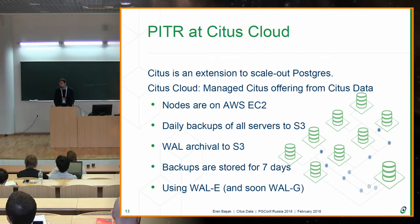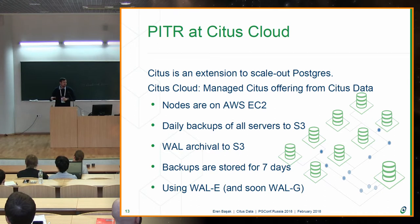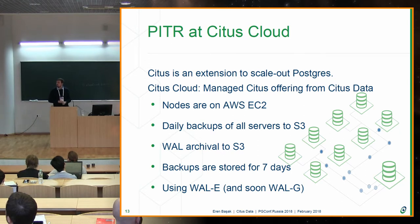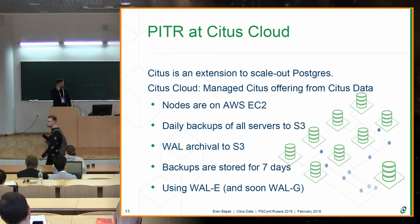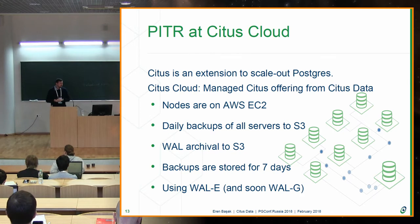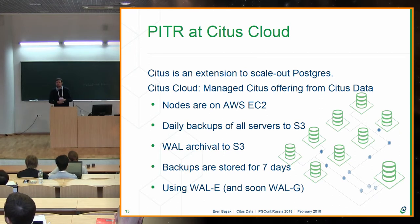At Citus we do this. Citus is an extension to Postgres that makes it work as a distributed system, allowing you to shard your database across many nodes and handling the routing of queries. We have Citus Cloud, a managed service on top of Amazon infrastructure. Managing even a single Postgres node in production is very hard — multiply that by 8 or 10. In Citus Cloud we create nodes on Amazon EC2, take data backups to S3, ship WAL logs to S3, and they are encrypted. We store backups and WAL logs for 7 days, so you can go back up to 7 days.